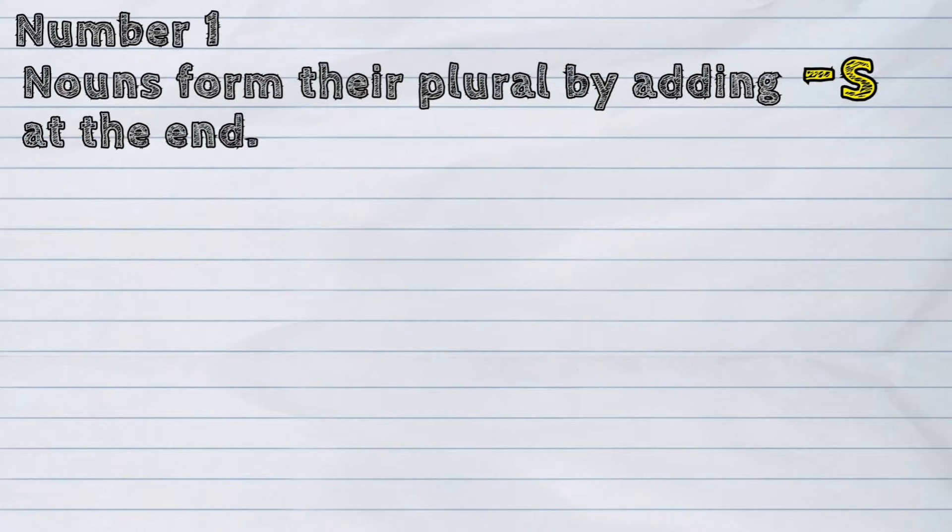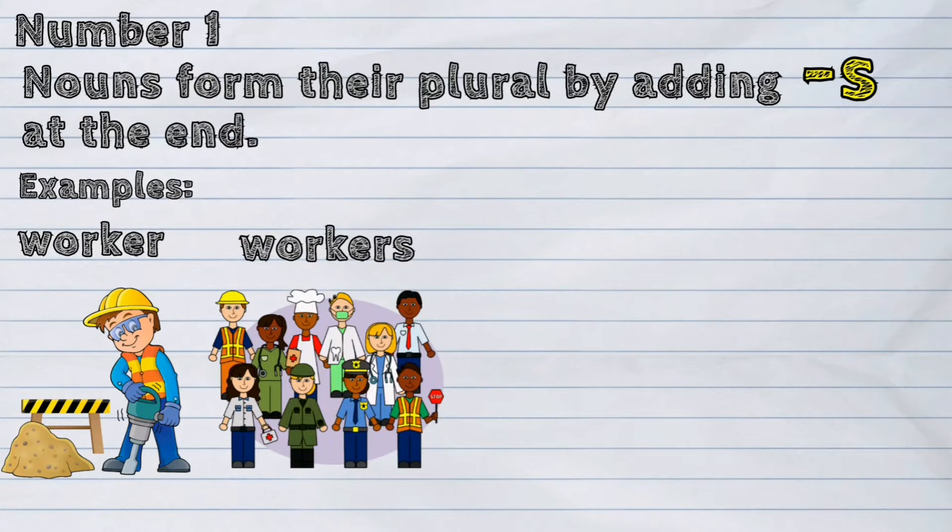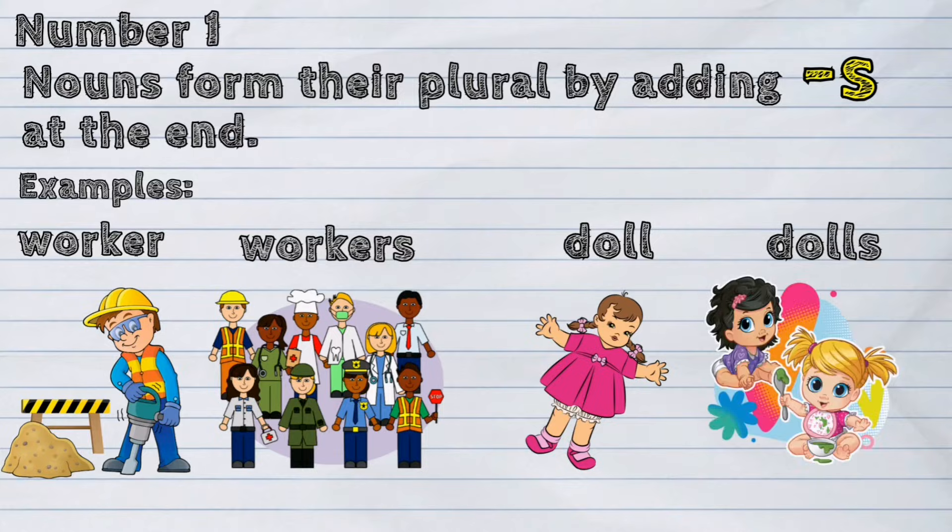Number one. Nouns form their plural by adding 's' at the end. Examples: worker, workers; doll, dolls.